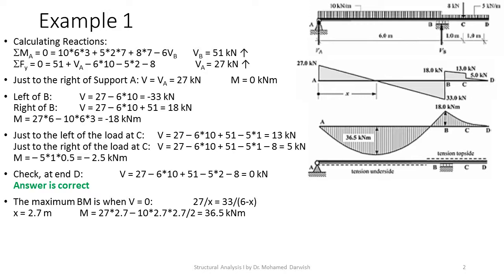A useful check is to compare the area under the shear force diagram to the bending moment value. The area of the first triangle is 27 times 2.7 over 2, which equals exactly 36.5 kN·m — confirming the bending moment value at that point. This gives you more than one tool to verify your work.